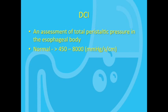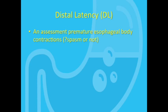The DCI is then expressed as millimeters of mercury per second per centimeter, and normal values are between 450 and 8,000. The last metric to discuss is the distal latency. This number is an assessment of the presence of premature esophageal contractions. In other words, it's an assessment of whether esophageal spasm is present or not.